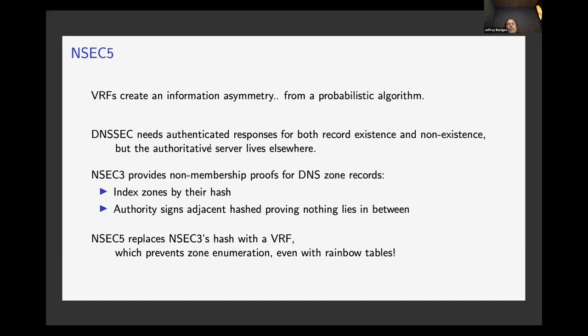So what NSEC5 does is it just replaces this hash with a VRF. We still - and so now what happens is when somebody asks for a zone, the non-authoritative name server, it doesn't have the zone signing key, but it does have the VRF secret key. So it gives them back a proof that the VRF of their particular request has some particular value, and then it gives them also the signature by the authoritative name server that the two closest, that the two adjacent real domains have certain VRF values. And now there's no way you can attack this, even with rainbow tables, because you have to actually make a request for every single evaluation of this VRF.